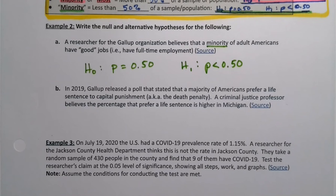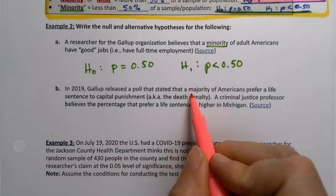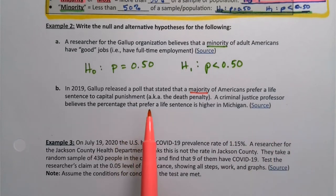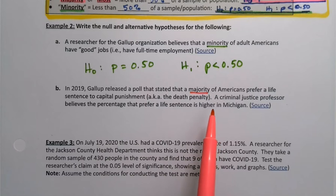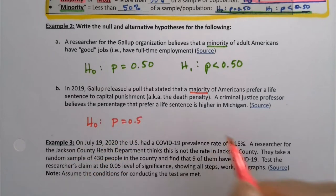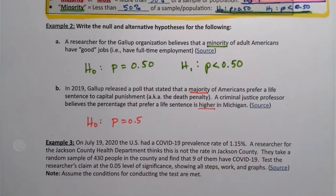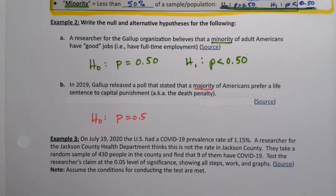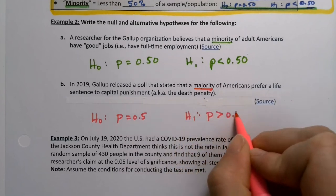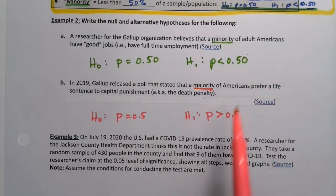In 2019, Gallup released a poll that said a majority of Americans prefer a life sentence to capital punishment, the death penalty. A criminal justice professor believes that the percentage that prefer life sentence is higher in Michigan. So the word majority, most Americans, more than half, would mean automatically that P is greater than 0.5. If you want to use 50% for any one of these, that's fine also.